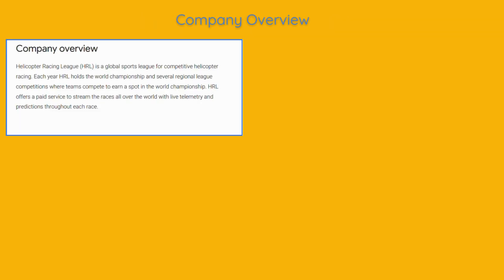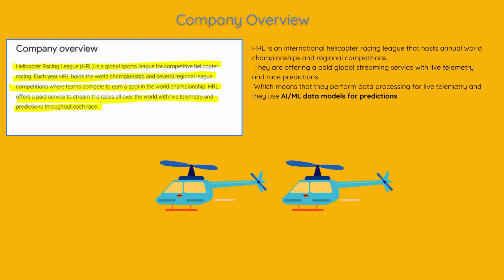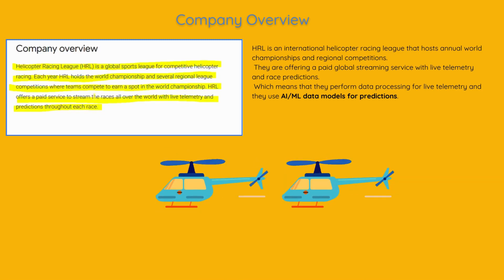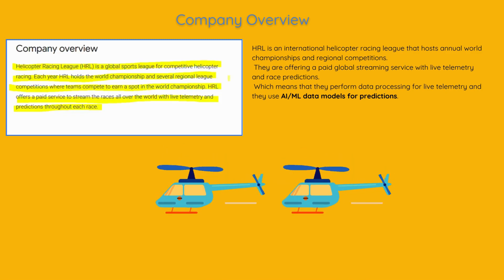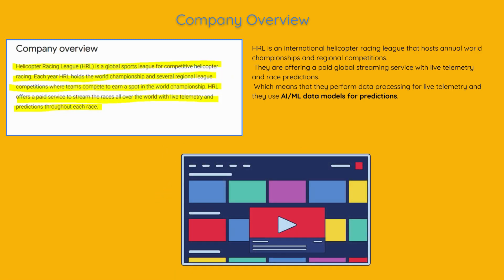Helicopter Racing League, HRL, is a global sports league for competitive helicopter racing. Each year, HRL holds the World Championship and several regional league competitions where teams compete to earn a spot in the World Championship. HRL offers a paid service to stream the races all over the world with live telemetry and predictions throughout each race, offering a paid global streaming service with live telemetry and race predictions.